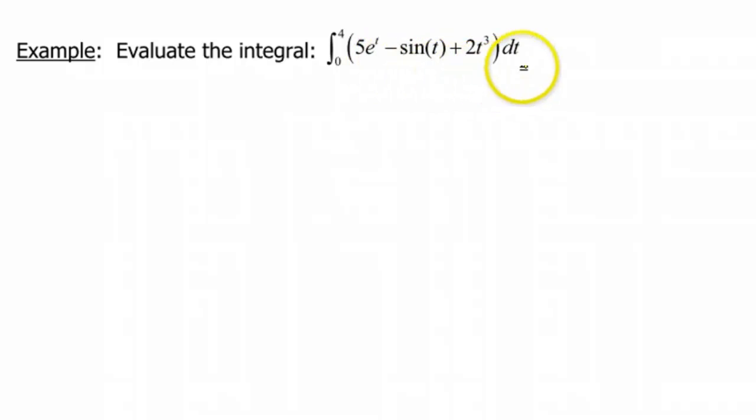This function is certainly continuous. E to the t doesn't have any problems, sine of t doesn't have any problems, and 2t cubed doesn't have any problems. So let's go ahead and do the antiderivative then of each piece, and then we'll figure out what our final answer is gonna be.